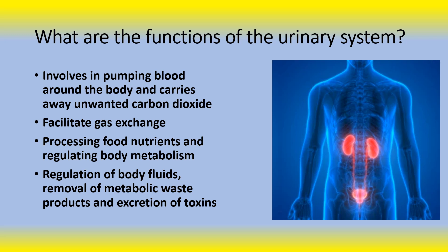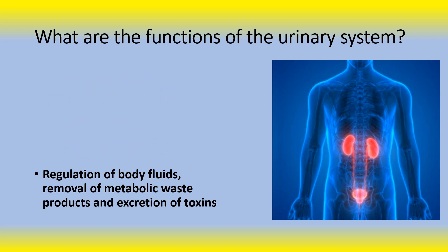There you go — those are the two kidneys and the bladder. The answer is regulation of body fluids, removal of metabolic waste products, and excretion of toxins. The urinary system is also called the renal system or urinary tract system. It also regulates blood volume and pressure. There are two parts: the upper urinary system, which includes the two kidneys and the ureter, and the lower part, which includes the bladder and the urethra.